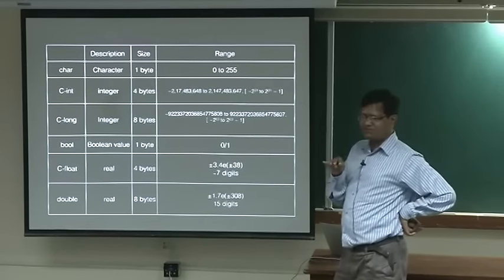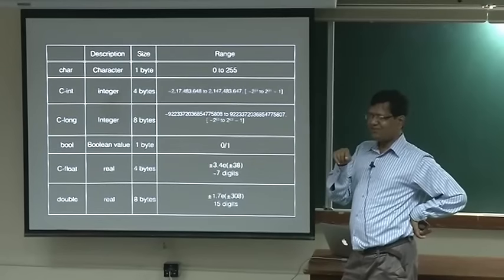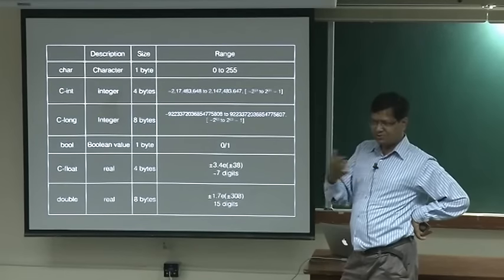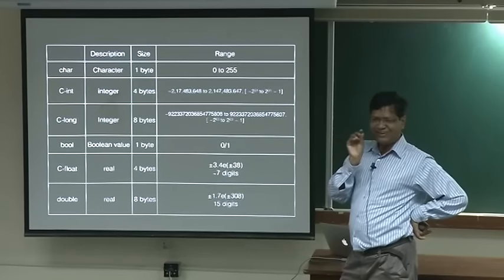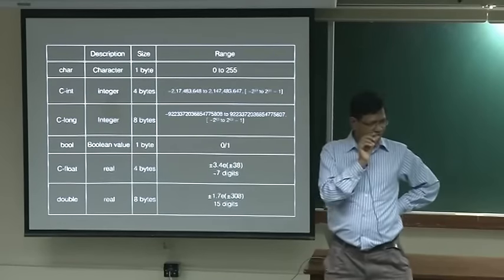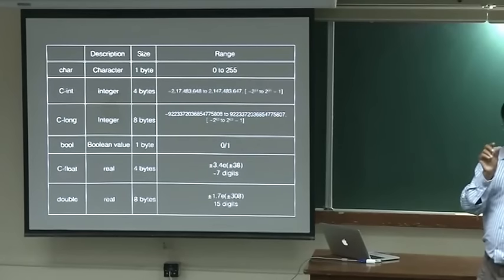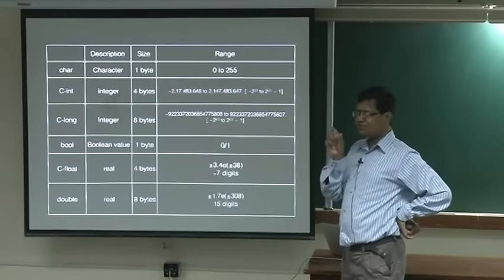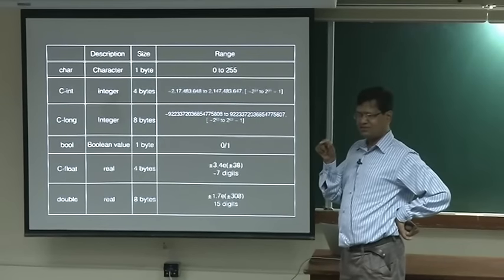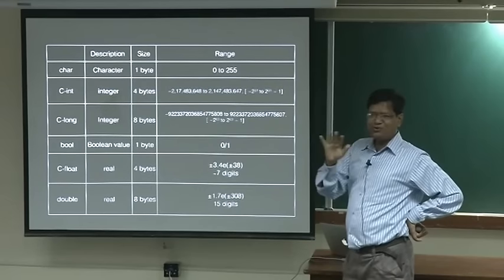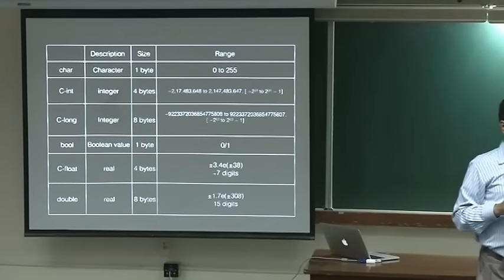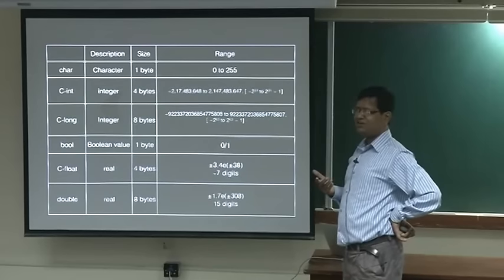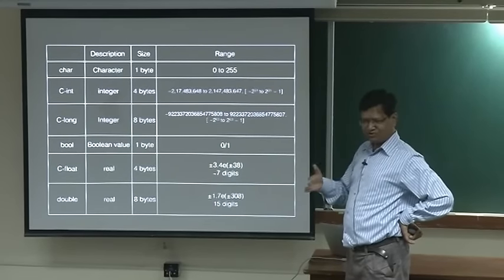Because of all the different languages, characters are now stored as 2 bytes — that is 16 bits, so 2 to the power 16 characters. 2 to the power 10 is 1000, so 2 to the power 16 is 2 to the power 6 times 2 to the power 10, which is 64,000. You can store 64,000 characters — this is called Unicode. Unicode uses 2 bytes per character.